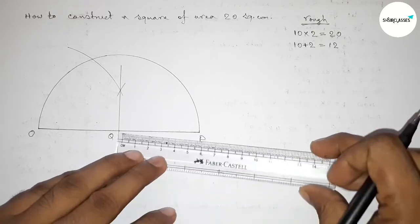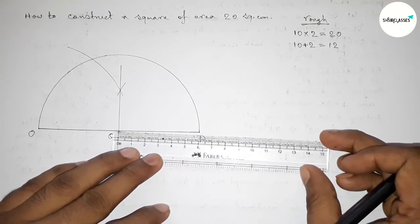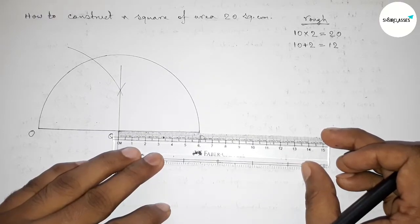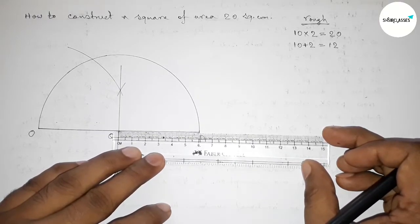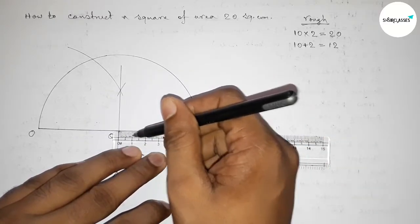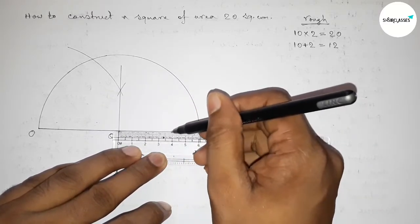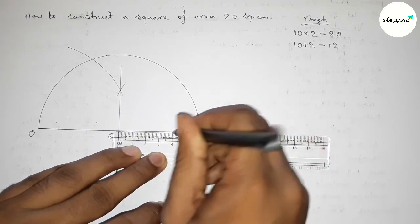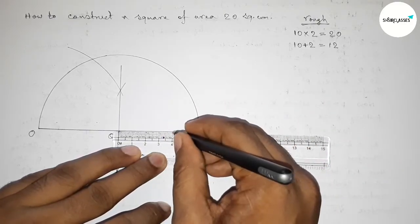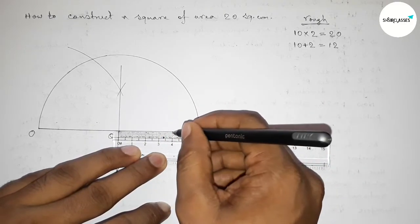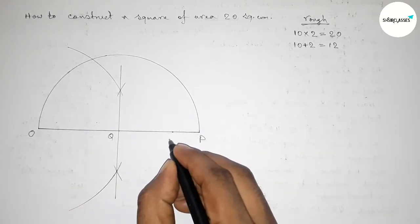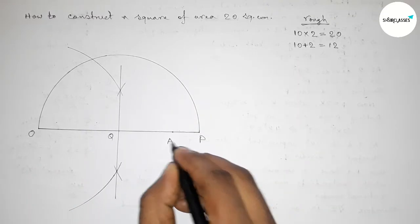Next, we have to take a 4 centimeter length from the point Q using a scale. Taking 4 centimeters from point Q — this is the 4 centimeter length — and marking a point A here.